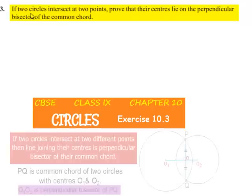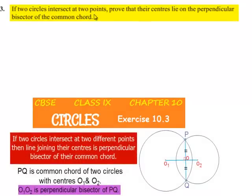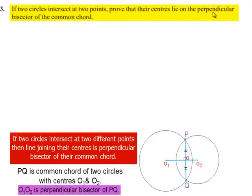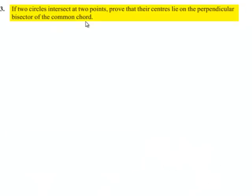Moving on to the third question: if two circles intersect at two points, prove that their centers lie on the perpendicular bisector of the common chord.